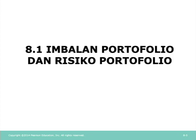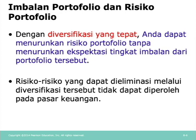Kemudian kita masuk ke topik pertama tentang imbalan dan risiko portofolio. Jadi intinya di sub-bab pertama ini adalah bagaimana cara melakukan diversifikasi yang tepat. Apa itu diversifikasi? Diversifikasi itu adalah cara kita meminimalisir, mengeliminasi, atau saling menghilangkan risiko antara dua aset, antara dua saham. Misalnya ada saham A dan saham B, maka bagaimana caranya dengan berinvestasi pada dua saham ini kita bisa saling meniadakan risikonya. Itu kalau diversifikasi yang sempurna.